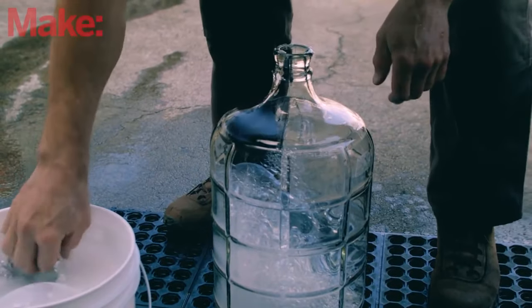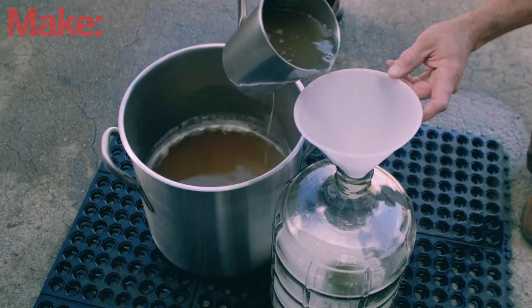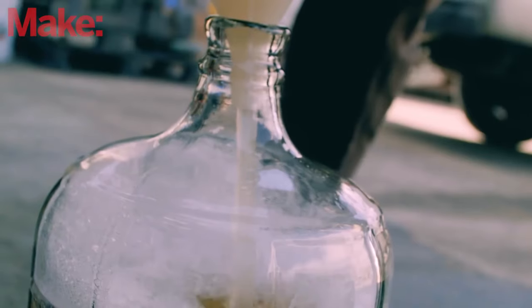Set the covered carboy on the floor in a well-lit area. Shake off the funnel and use it along with the sanitized scoop to pour the honey water mixture into the carboy.